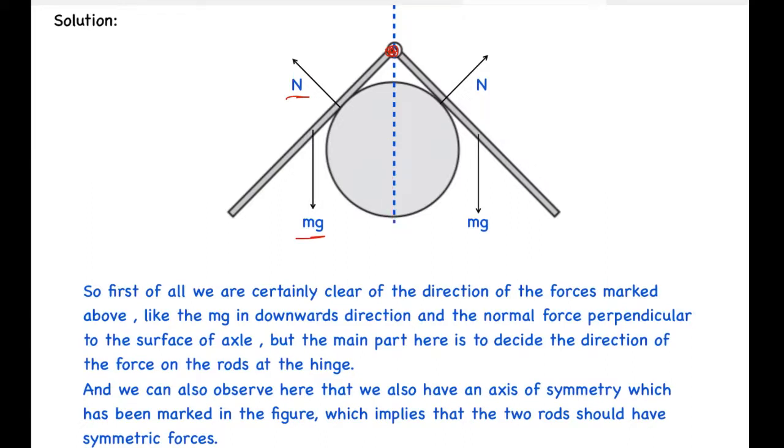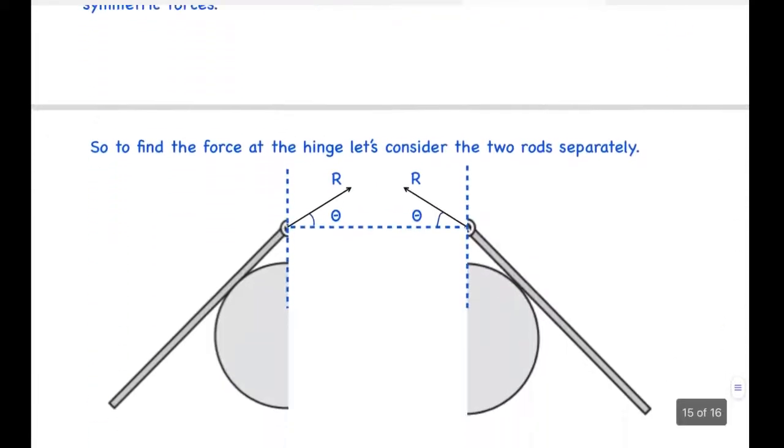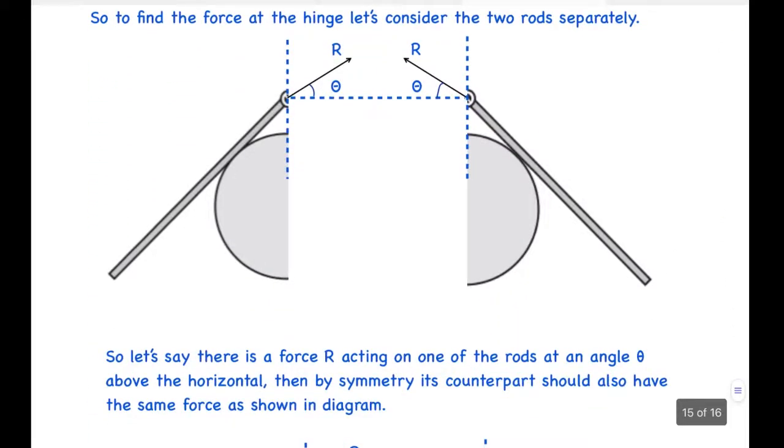We can also observe that we have an axis of symmetry which has been marked in the figure. This axis implies that the two rods should have symmetric forces. So both the rods are similar equivalents, so their forces on them should be symmetric in nature. Let's try to find the force at the hinge.